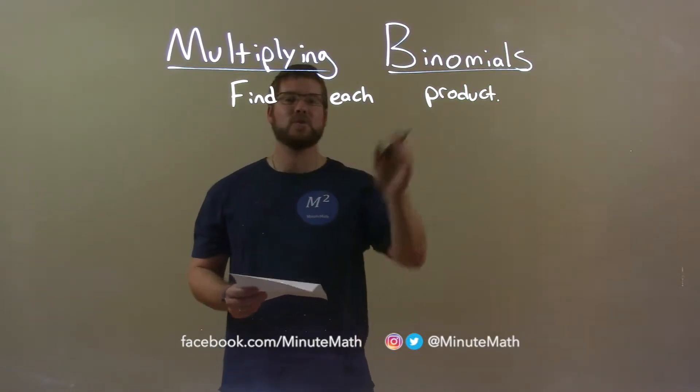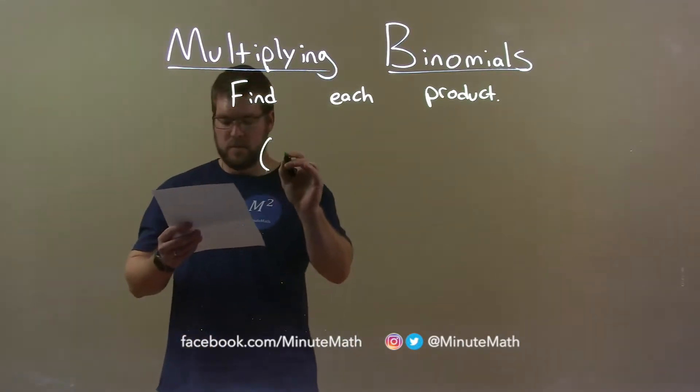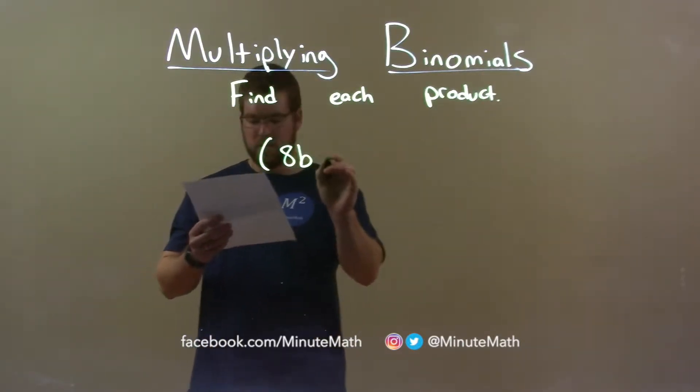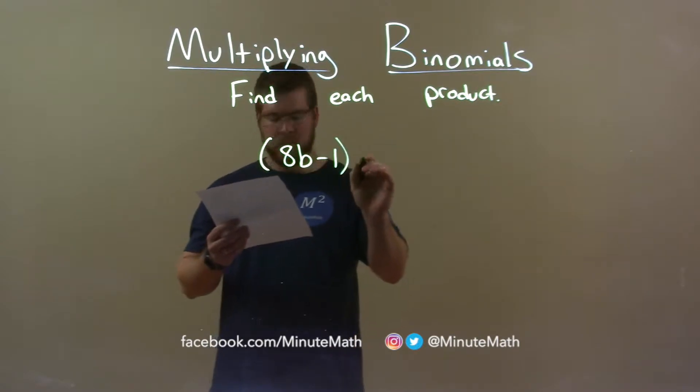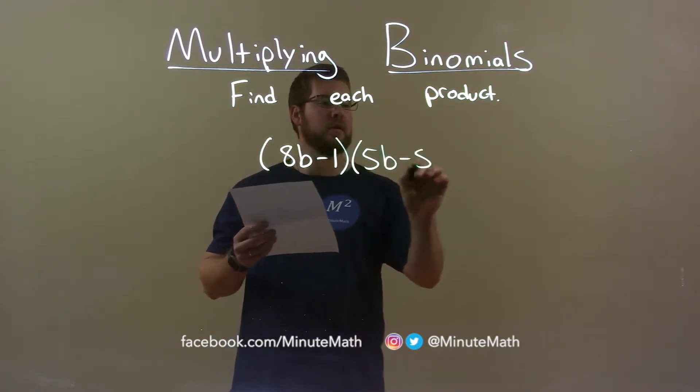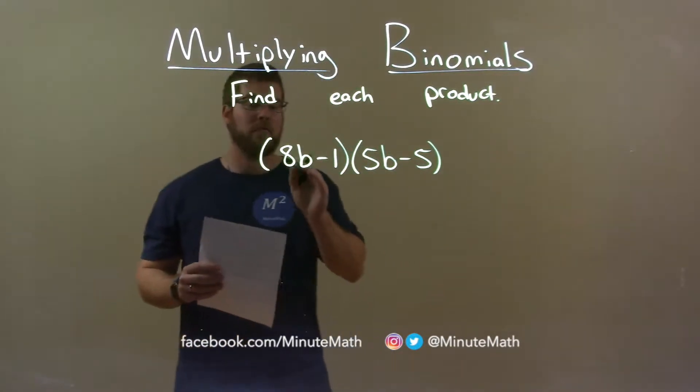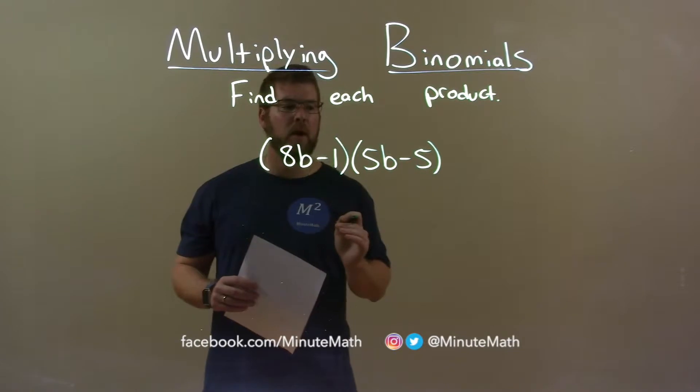Find each product. So, if I was given this product (8b - 1) times (5b - 5), we want to take all parts of our first parenthesis and multiply it by all parts of our second parenthesis.